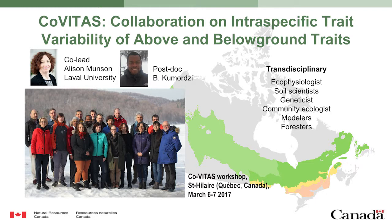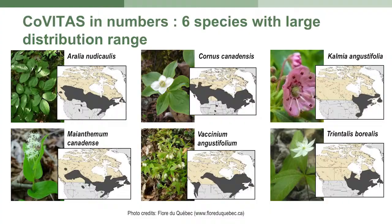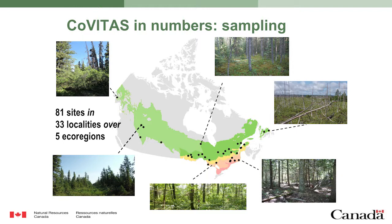We had 23 teams across Canada that accepted to work with us. It was a nice transdisciplinary team — from ecophysiologists and community ecologists, but also community geneticists and ecology geneticists that joined the team, so we could bring all of ecophysiology, community ecology, and genetics into the same project. We chose six species with large distributions found throughout Canada, and with the team, 81 sites were chosen where people collected information we needed within their existing sites using a protocol we sent — 81 sites located in 33 localities across Canada.